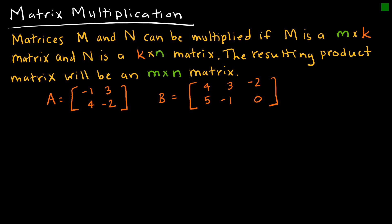Matrix multiplication is a little more involved and more difficult. The most important thing to understand is that you cannot always multiply two matrices together. You can multiply if M is M×K and N is K×N — meaning the number of columns of the first matrix must equal the number of rows of the second matrix. The resulting matrix is M by N. Let's see if we can take A times B and B times A.